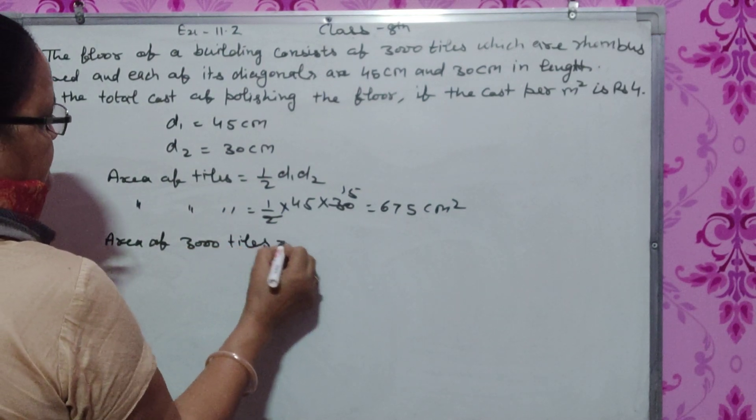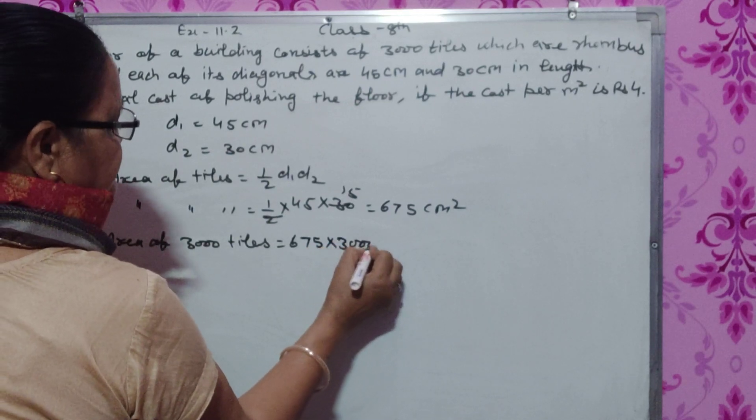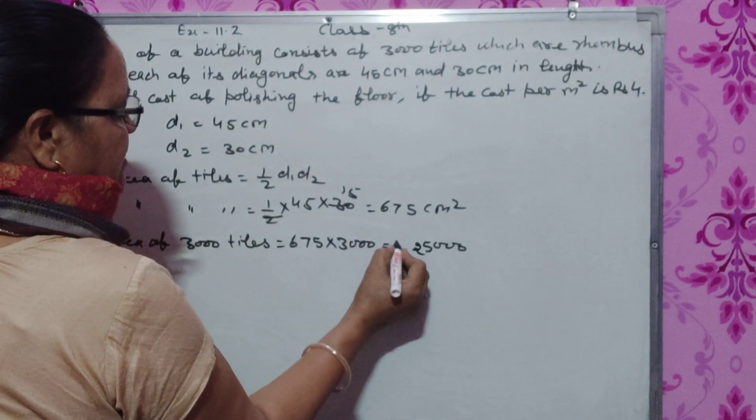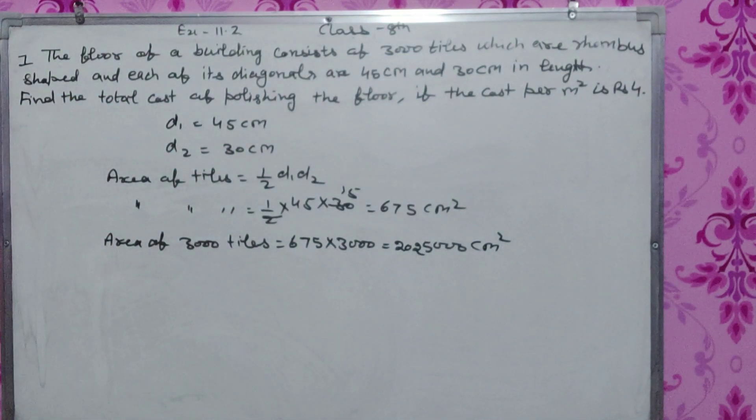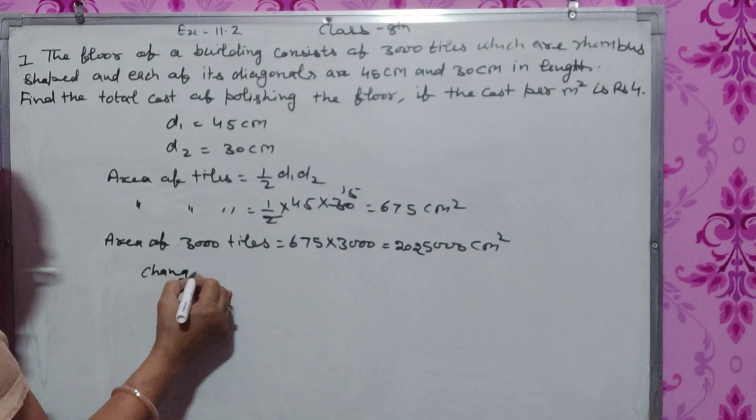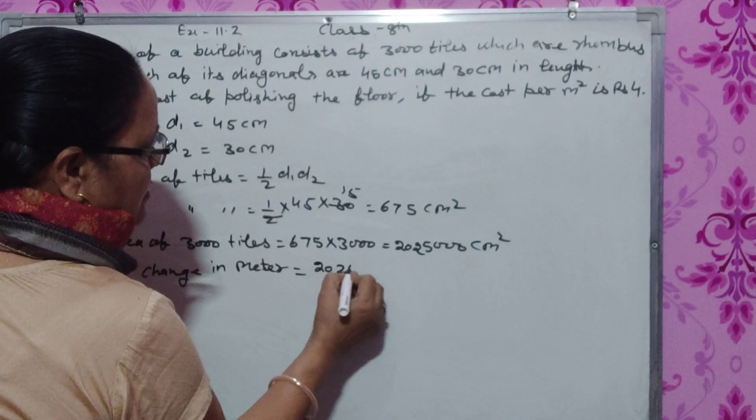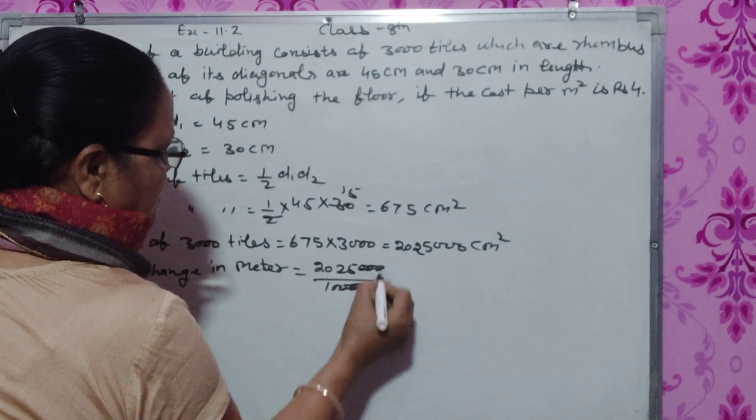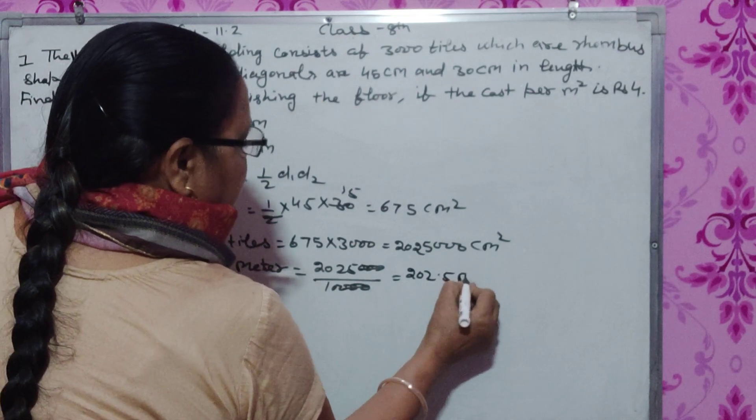Area of 3000 tiles is 675 cm square times 3000, which equals 2,025,000 cm square. To change into meters, divide by 10,000, which gives us 202.5 meter square.